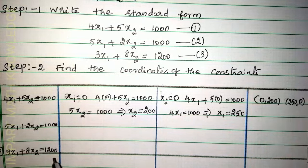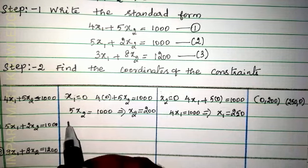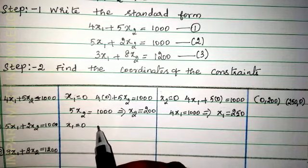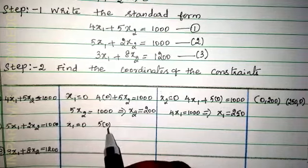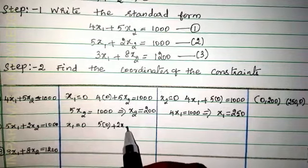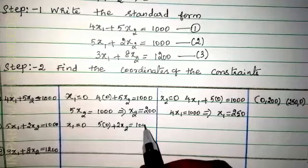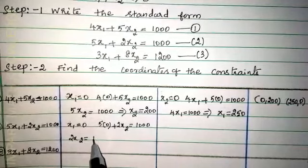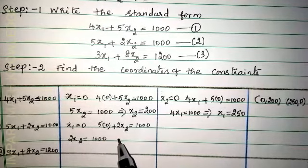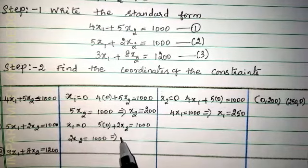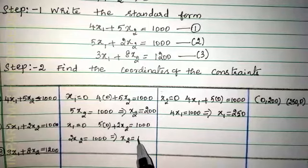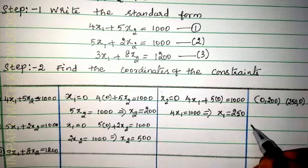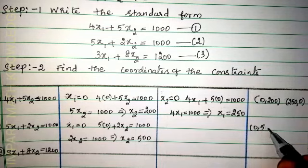For the second constraint, 5x1 plus 2x2 equal to 1000 — put x1 equal to 0: 2x2 equals 1000, so x2 equals 500. Coordinates: (0, 500).